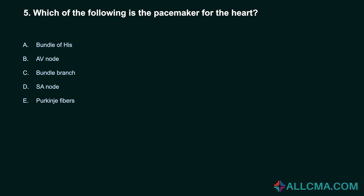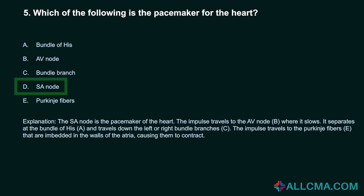Question 5: Which of the following is the pacemaker for the heart? A. Bundle of His. B. AV node. C. Bundle branch. D. SA node. E. Purkinje fibers. Correct answer: D. SA node. The SA node is the pacemaker of the heart. The impulse travels to the AV node where it slows, separates at the bundle of His, and travels down the left or right bundle branches. The impulse then travels to the Purkinje fibers, which are embedded in the walls of the atria, causing them to contract.